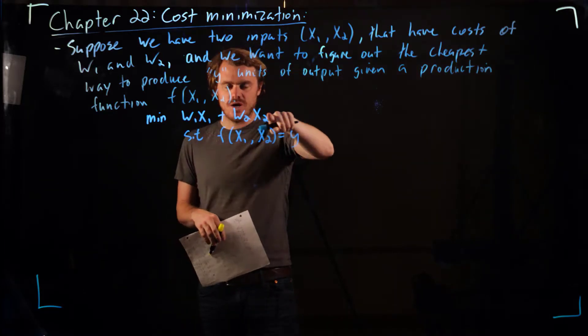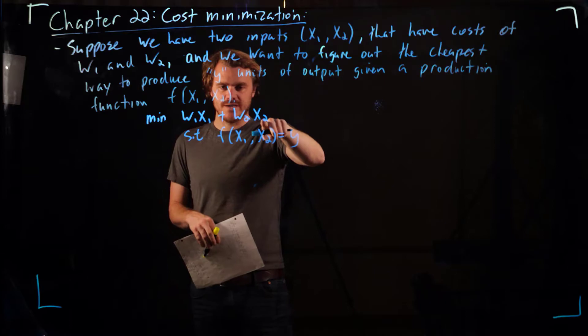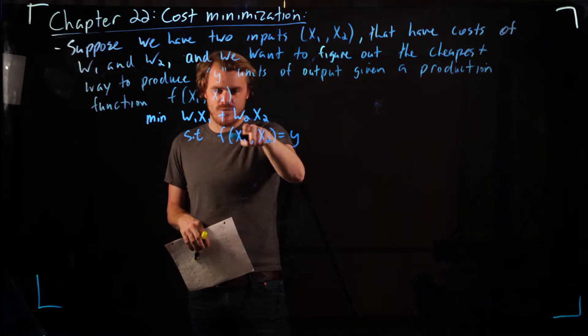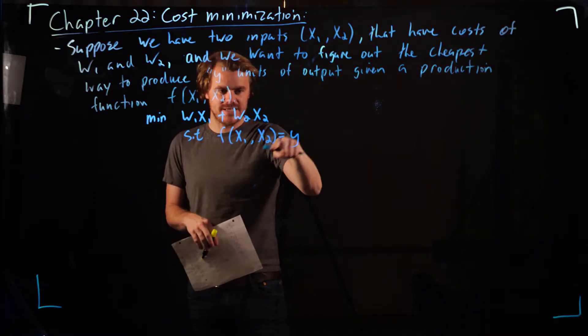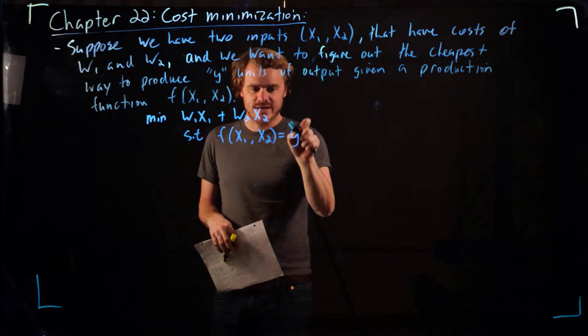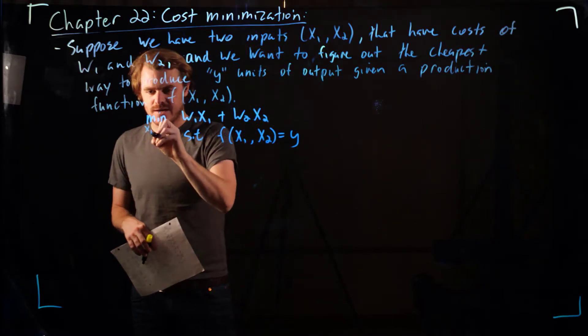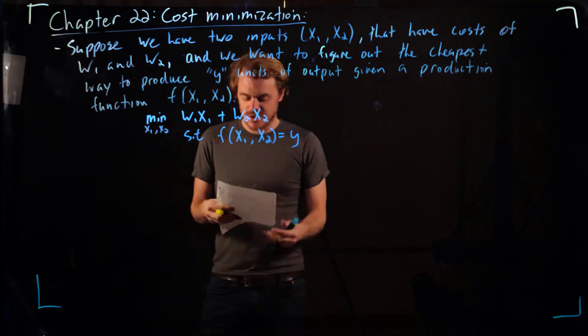producing y units. This is the total cost of production, and we're constraining ourselves to produce exactly y units. We get to pick how much of each input to use.